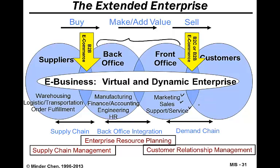At the front end, dealing with the customer, we usually refer to this as the demand chain. It is supported by software which we call customer relationship management software — a CRM system. The software that handles the back office operation is usually referred to as ERP software, enterprise resource planning software. The supply chain at the back end is usually referred to as SCM — supply chain management software.